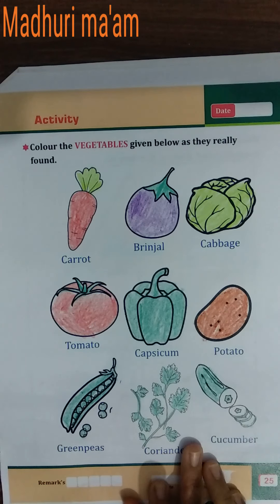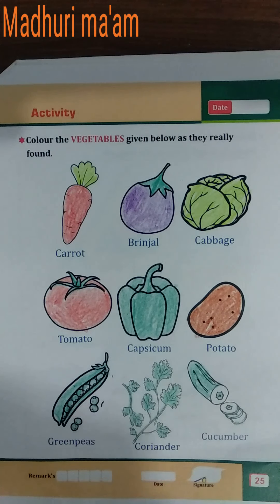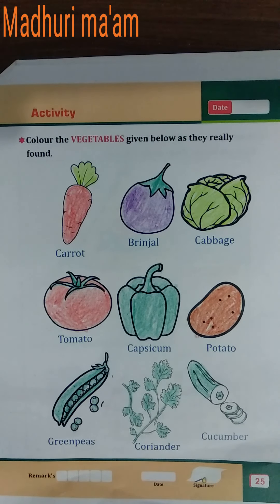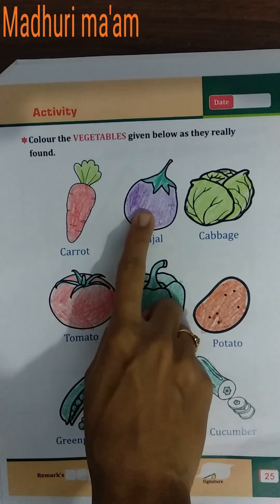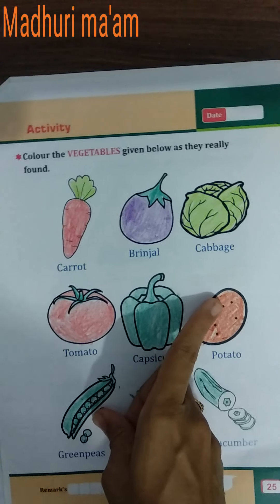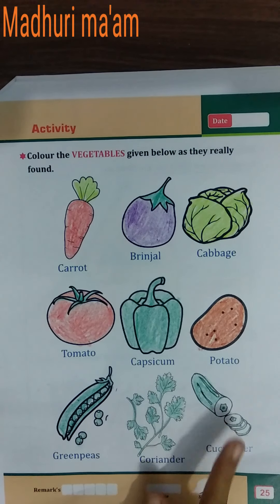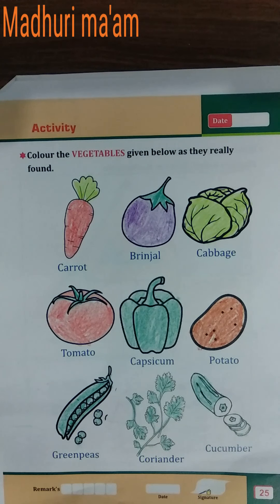Like this, and here comes the white part so don't color it. So children, today's activity is coloring in vegetable pictures. Today we colored the vegetables. What is the color of carrot? Red color. Brinjal? Violet. Cabbage? Green. Tomato? Red. Capsicum? Green. Potato? Brown. And cucumber, green peas, coriander? Green. So do these colors in your GK textbook. Bye bye, thank you!